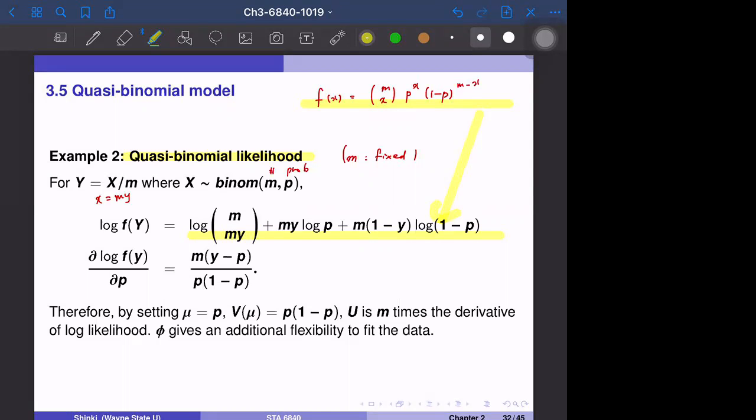X is equal to m y, so just transform this into this, then you can see the log likelihood function is this. Then the first derivative with respect to p, so p is the expectation of y, the mean in the general setting. The first term can be ignored because we don't have p. The second term, log of p becomes one over p, so m y over p, and this becomes one over one minus p. If you simplify that expression, it becomes this one.